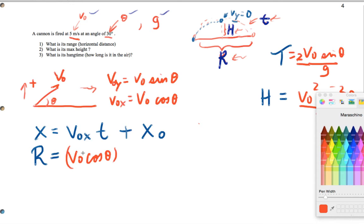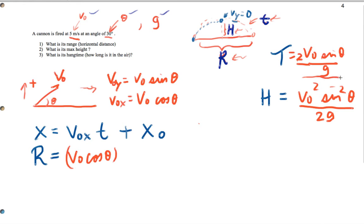And for t, I'm going to substitute this formula here for time. So we're going to get 2 v naught sine theta all over g, plus I start at an initial position of 0.